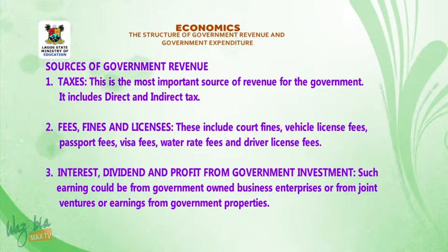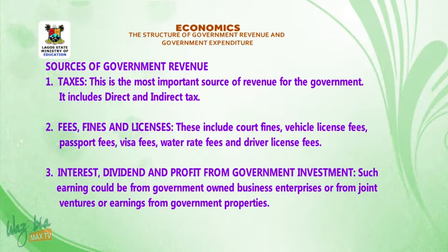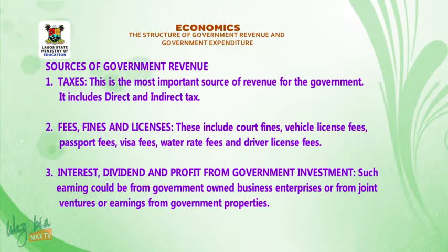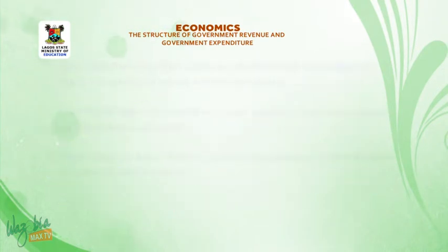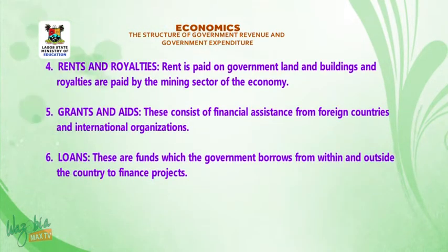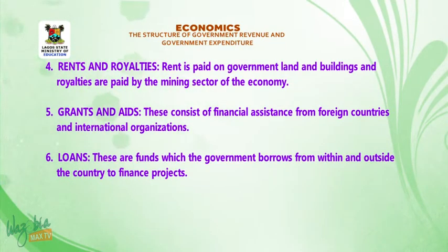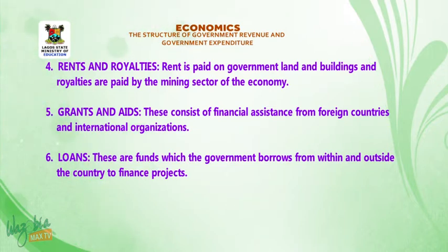3. Interests, dividends and profits from government investment. Such earnings could be from government-owned business enterprises, from joint ventures, or earnings from government properties. 4. Rent and royalties — rent is paid on government land and buildings, and royalties are paid by the mining sector of the economy.